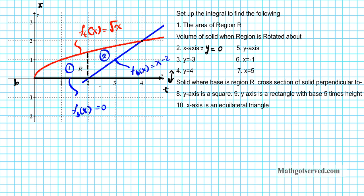Let's take a look at question number 5. In problem 5 we're rotating the region about the y-axis. The y-axis is equivalent to x equals 0, and it can be written in function form as f of y equals 0. This is the formulation we're going to be implementing when representing the axis of rotation within the formula.